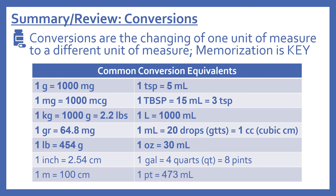Common length and volume equivalents: one inch equals 2.54 centimeters; one meter equals 100 centimeters. One teaspoon equals 5 milliliters; one tablespoon equals 15 milliliters, which also equals 3 teaspoons; one liter equals 1,000 milliliters; one milliliter equals 20 drops (GTTS), which also equals 1 cc. One ounce equals 30 milliliters; one gallon equals 4 quarts, which equals 8 pints; one pint equals 473 milliliters.